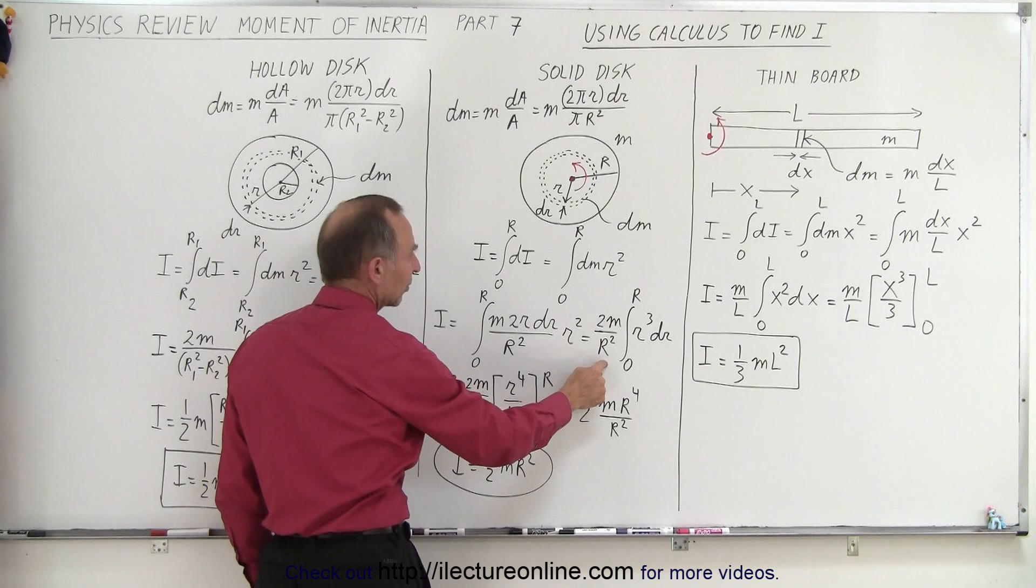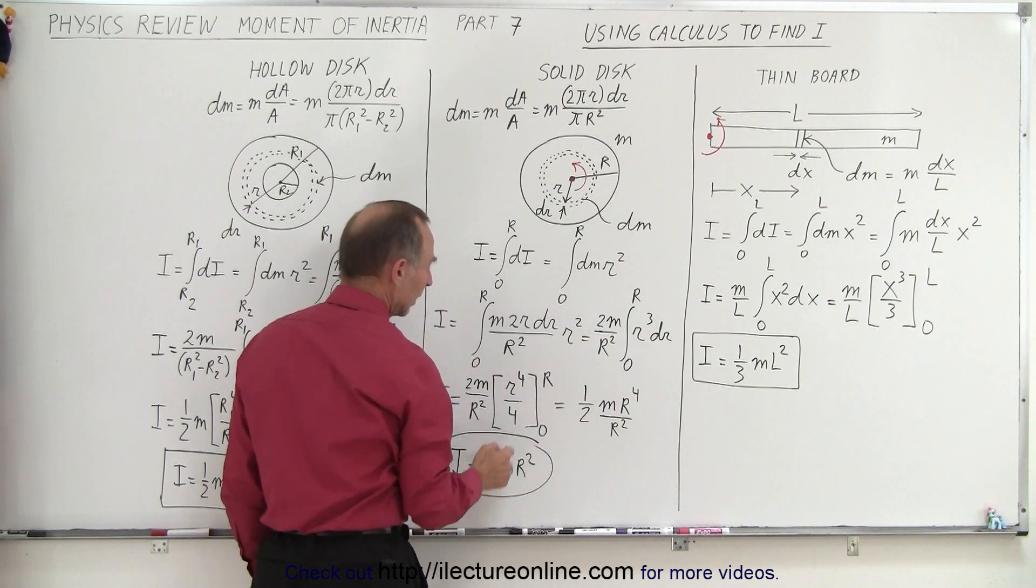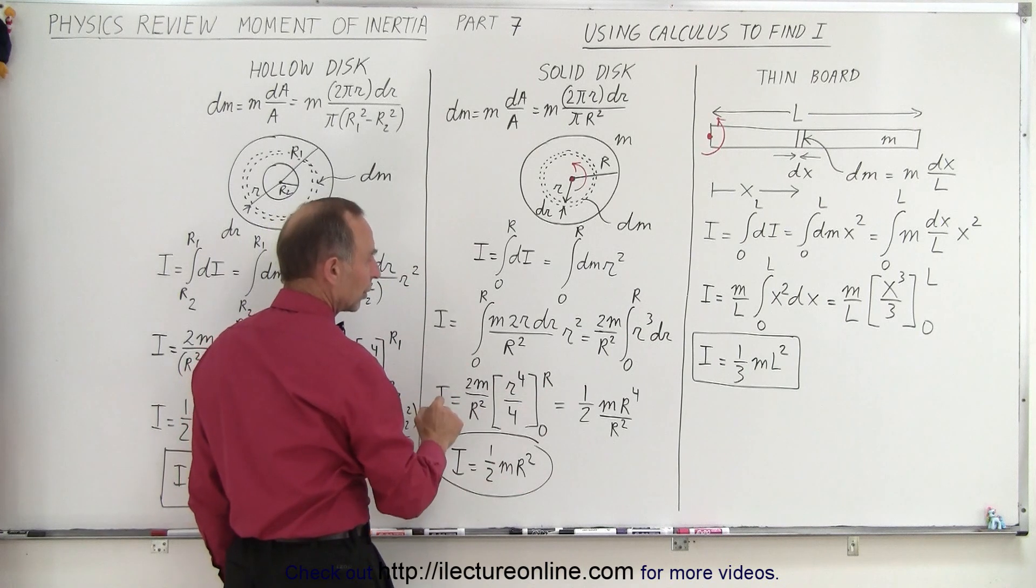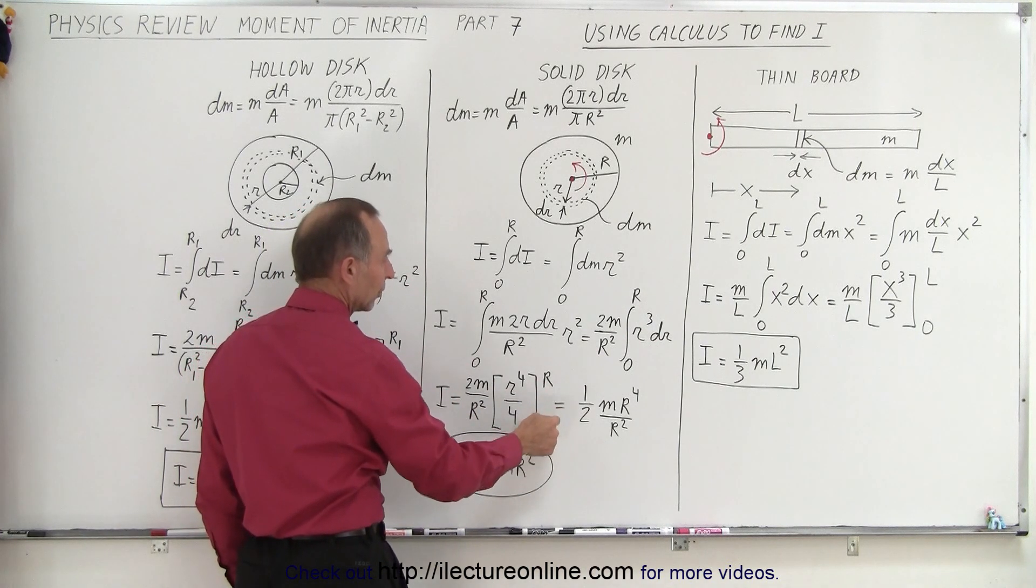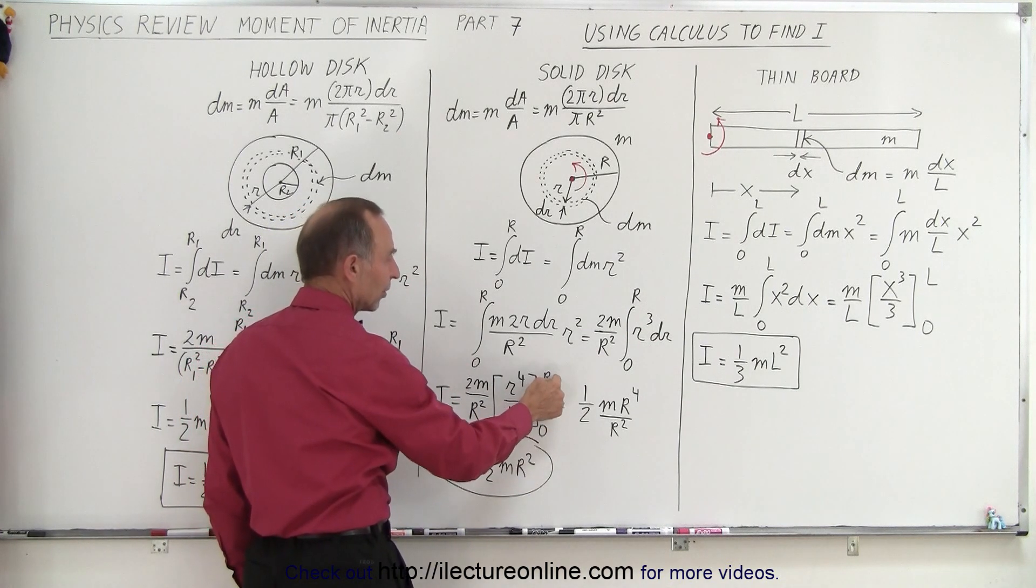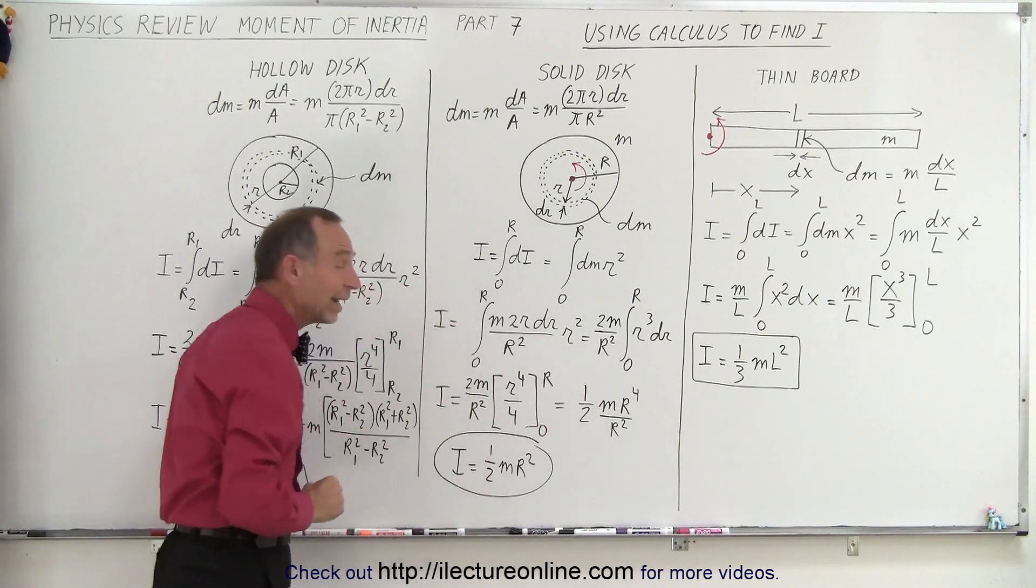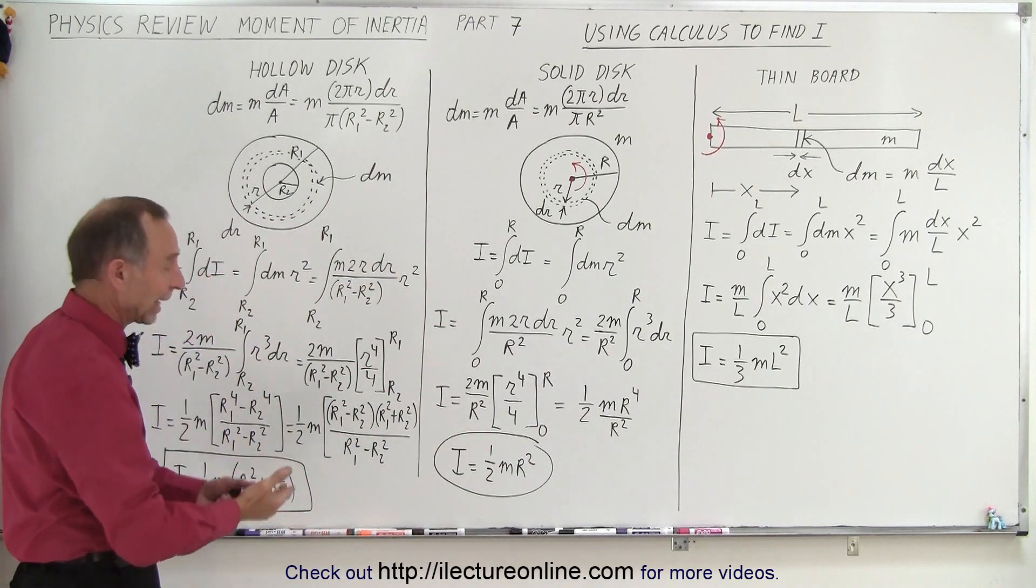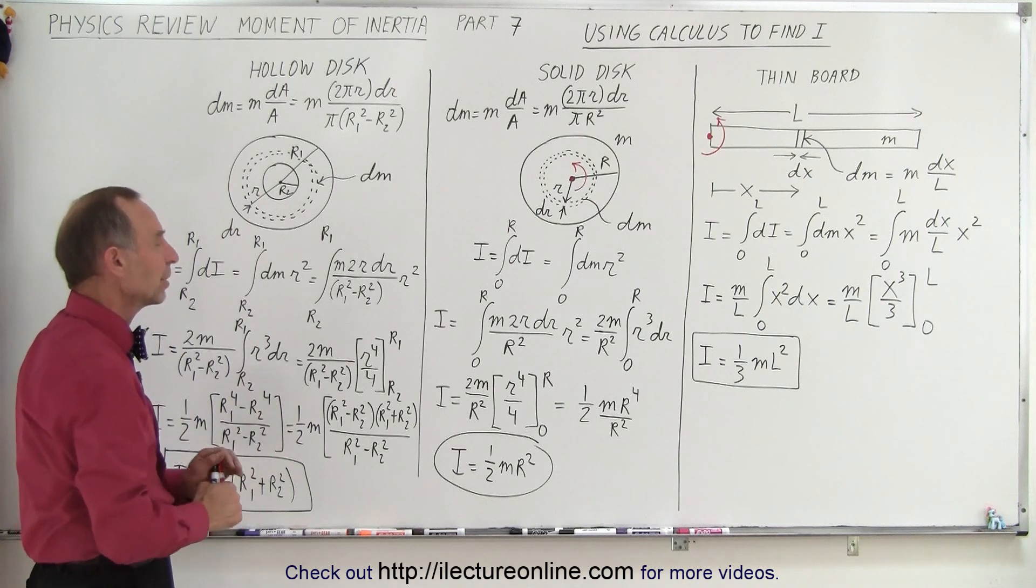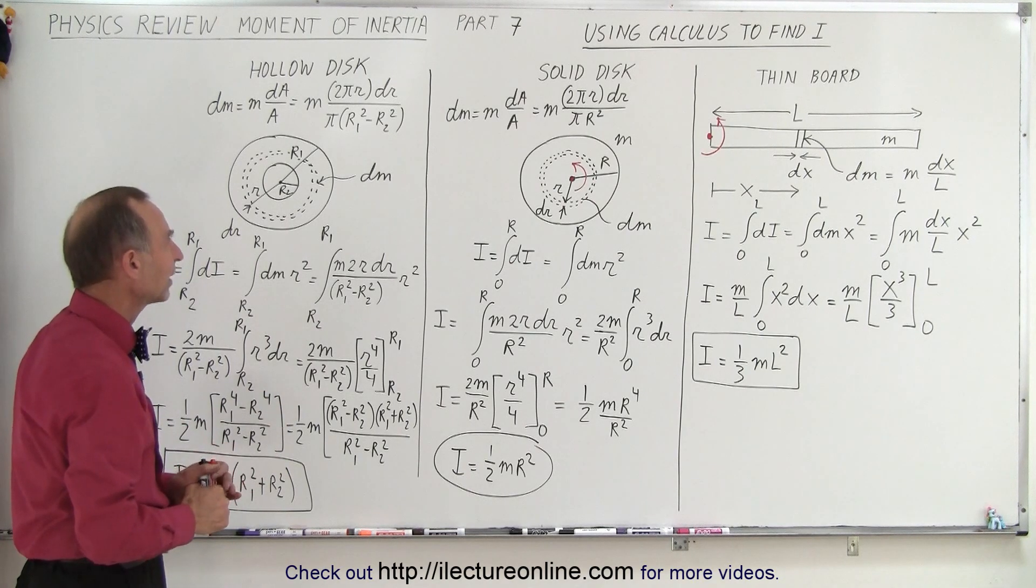All the constants are taken out, 2m and the radius of the disk squared. Those are all constant. We end up with r cubed dr. Integrate the r to the fourth over four. When you evaluate from zero center mass to the outside of the disk, we end up with one half mr squared for the moment of inertia of the disk. Again, by now that should be a familiar equation.